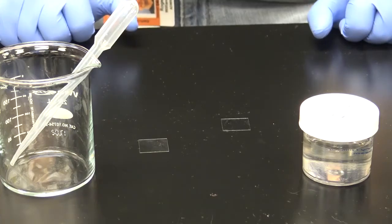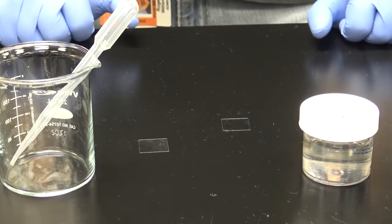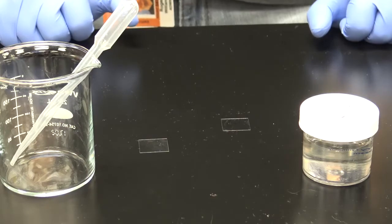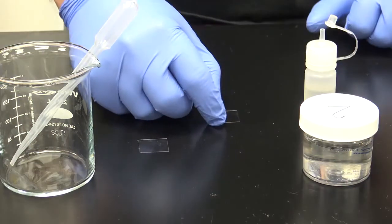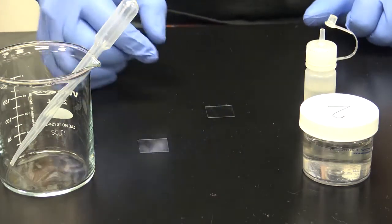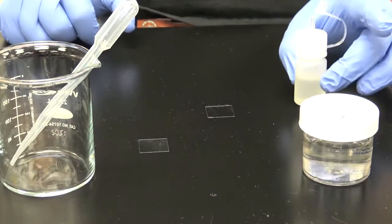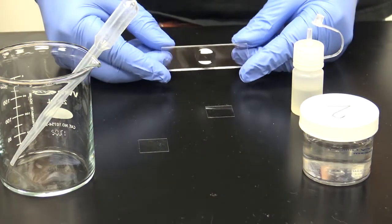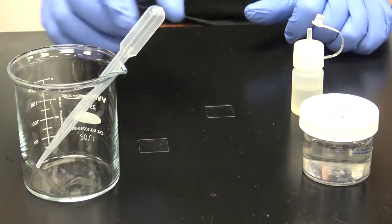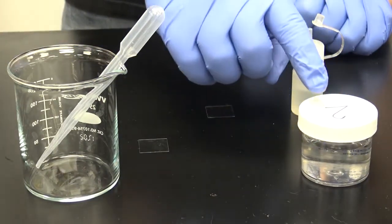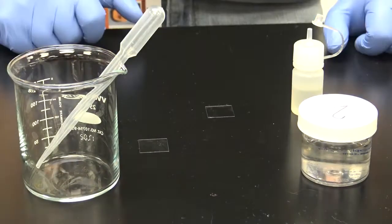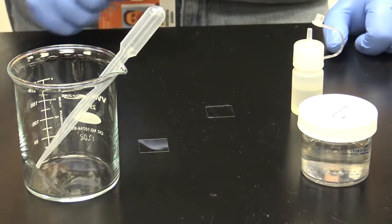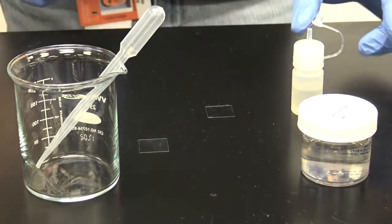The hanging drop technique allows you to look at live organisms for an extended period of time. Materials you'll need for the hanging drop technique are immersion oil, a concave slide, and the samples you'll be working with. In this case, this is amoeba proteus. Let's now demonstrate how the hanging drop technique is conducted.